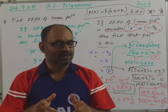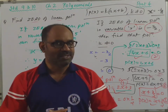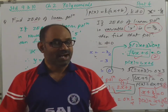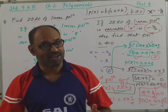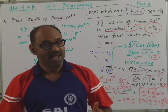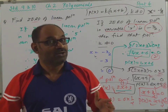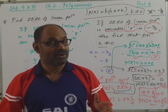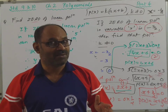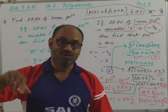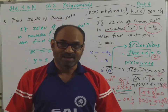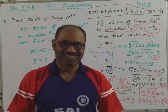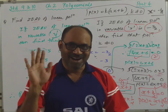So that is how you find the polynomial when the zero is given. See you soon, and we'll see how to find zeros of a quadratic polynomial — and if the two zeros of a quadratic polynomial are given, how to find that polynomial. Till then, goodbye.